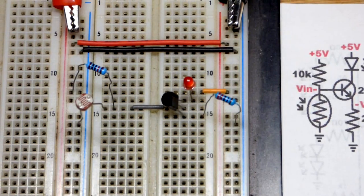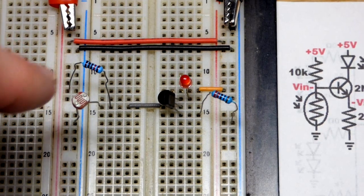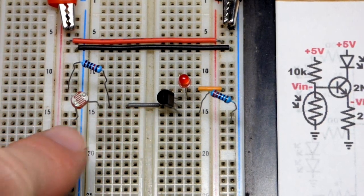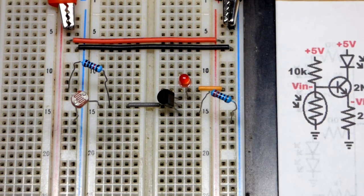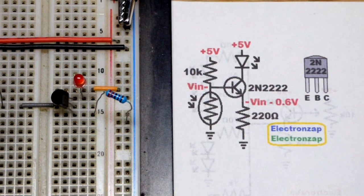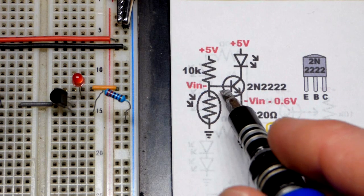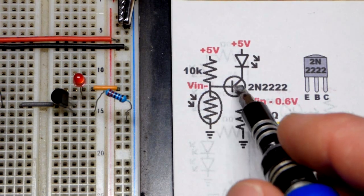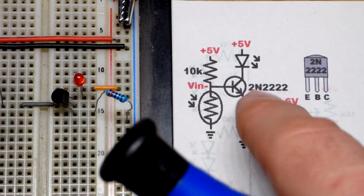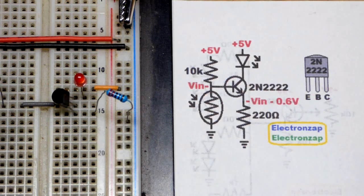When there's enough light, as there is now, falling on the light-dependent resistor, it pulls the voltage down — to near 0 volts if it's bright enough — well below the 0.6 to 0.7 volts you need to start getting conduction. So that will turn the transistor off, it won't let current flow, and thus the LED will not light up.